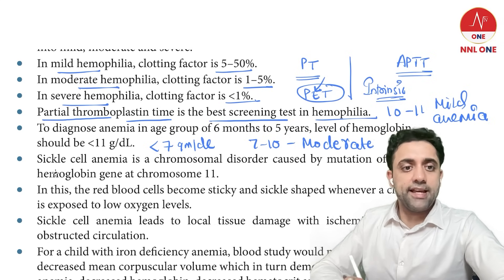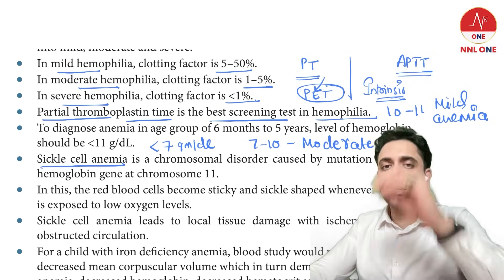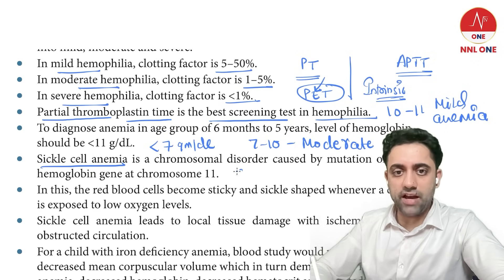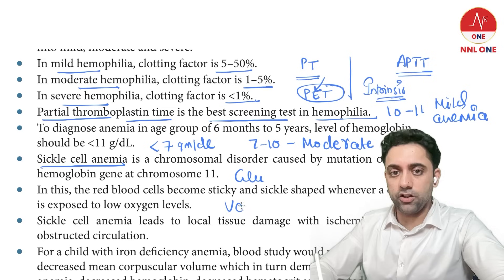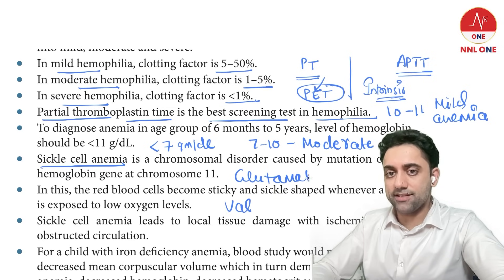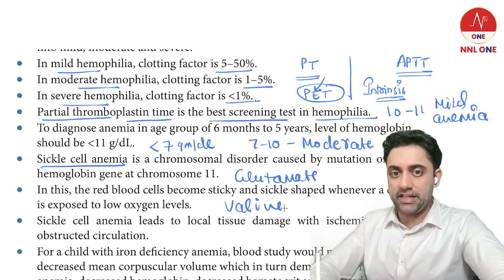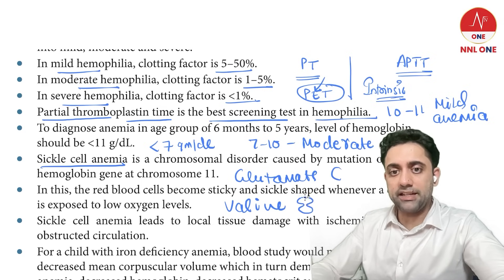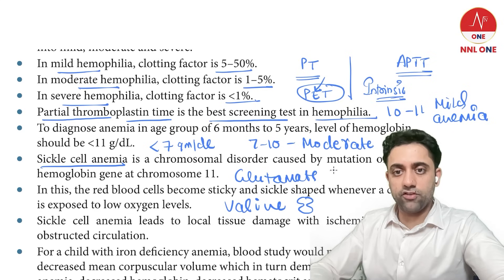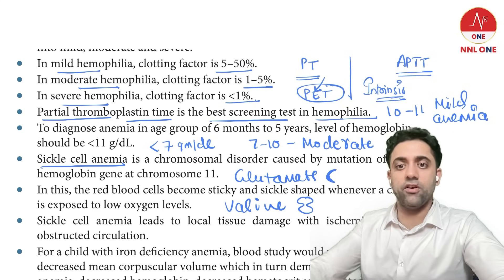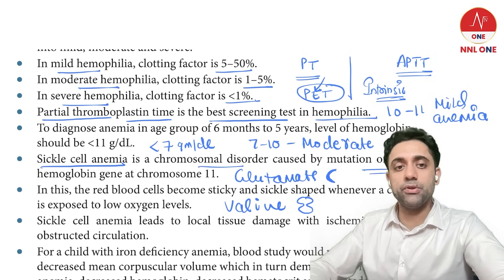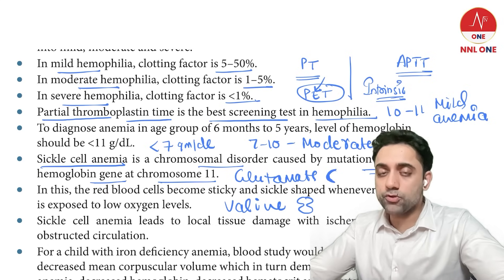In sickle cell anemia, the mnemonic is 'glue and val' — the glutamate amino acid has been replaced by valine. That is why the beautiful biconcave RBC converts into a sickle-shaped RBC. Sickle cell anemia is a chromosomal disorder caused by mutation of the beta hemoglobin gene at chromosome number 11.